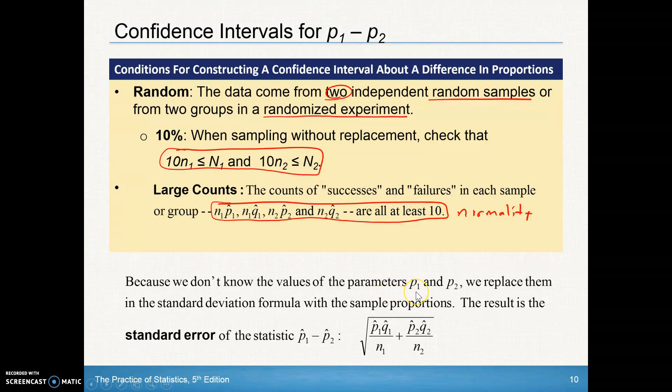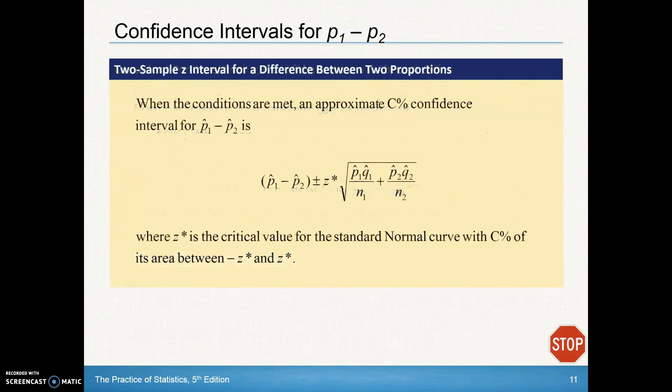Sometimes we don't know the values of the true parameters, so we'll replace those with P-hat and Q-hats when we don't know those. And it won't be called standard deviation at that point—it would actually be called standard error.